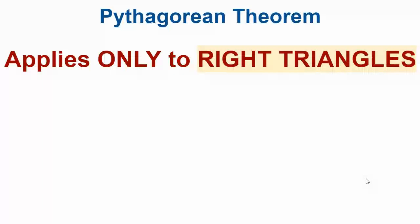Pythagorean Theorem applies only to right triangles. That's it. It has to be a triangle, and you have to have a right angle in that triangle for this theorem to work. So that's the key thing.